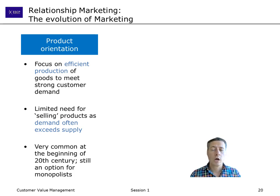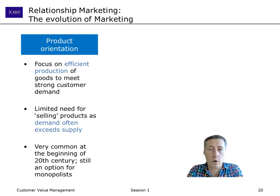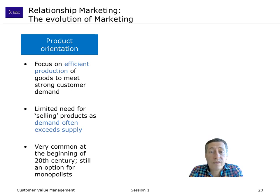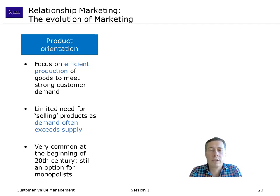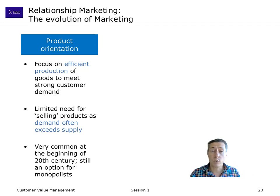There was one car producer, or maybe two companies making soap, but many companies were in an essentially monopolistic situation. If you are a monopolist, you do not really need to care about marketing. Assume you are the only car producer in the world — you can produce 500 cars per month, but 1,000 people want a car. There is already a gap of 500 customers you cannot satisfy. Why would you invest money in advertising to attract even more customers when you can't keep up with production as it is?